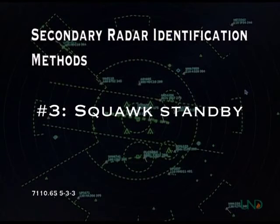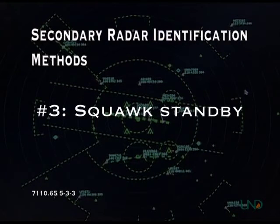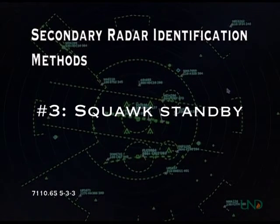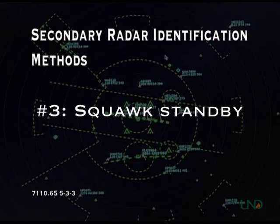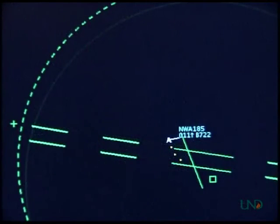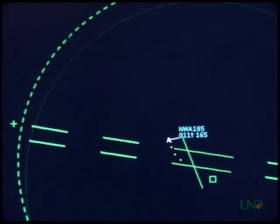The third method is to have the pilot squawk standby. On your radar display, you'll notice that the secondary information will disappear as the pilot changes the transponder to standby mode. Then instruct the pilot to squawk normal, and observe on the radar display that the secondary information returns. In this example, Northwest 185 has departed Academy Airport, but no rolling call was received.